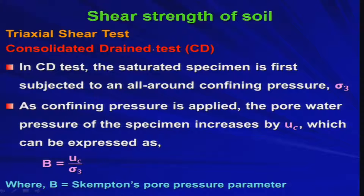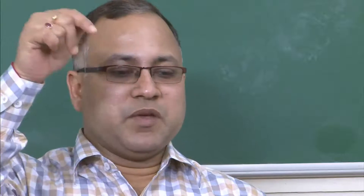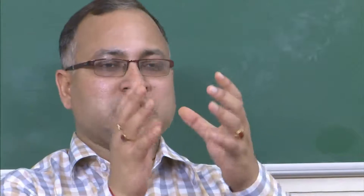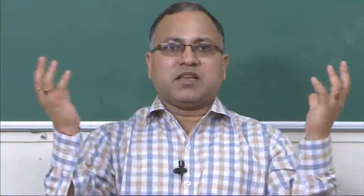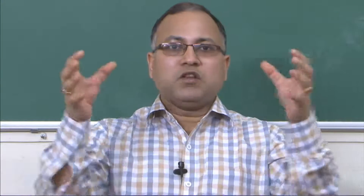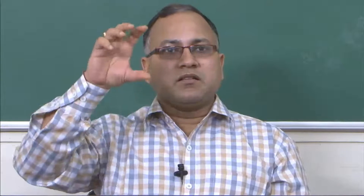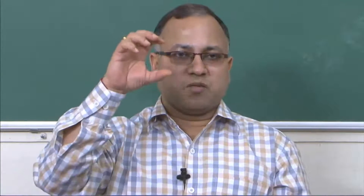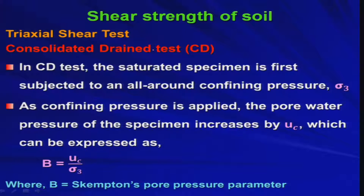As the confining pressure is applied, the pore water pressure of the specimen increases. From the consolidation chapter, if you recall, immediately when you apply some extra pressure — say the all-round cell pressure sigma_3 — you will get some increase in the pore water pressure because water is incompressible. This excess pore water pressure can be expressed as B = u_c / sigma_3, where B is the Skempton's pore pressure parameter.